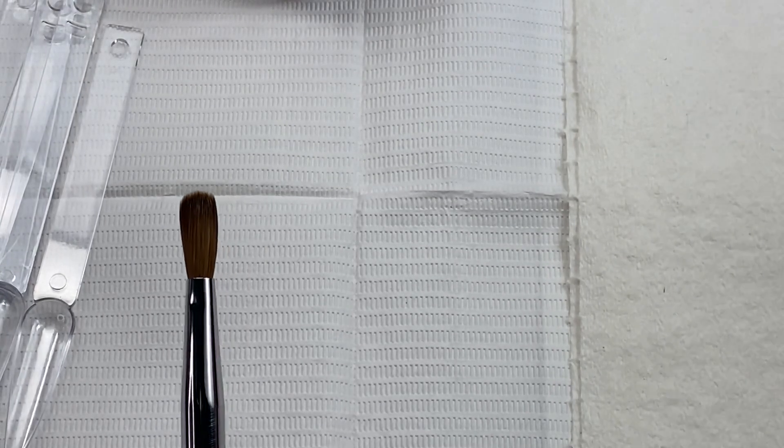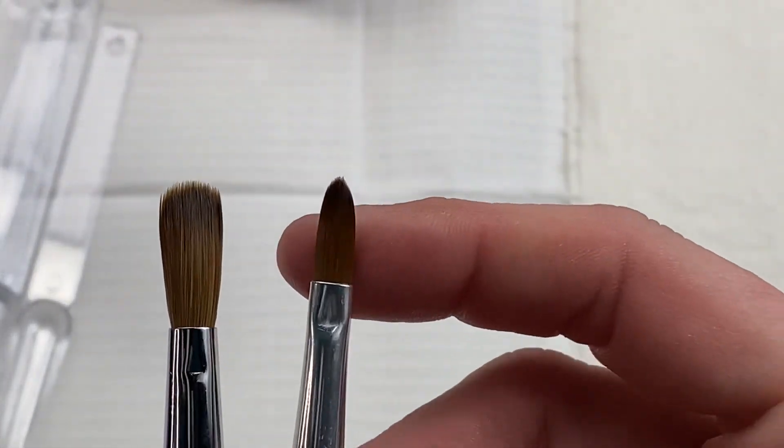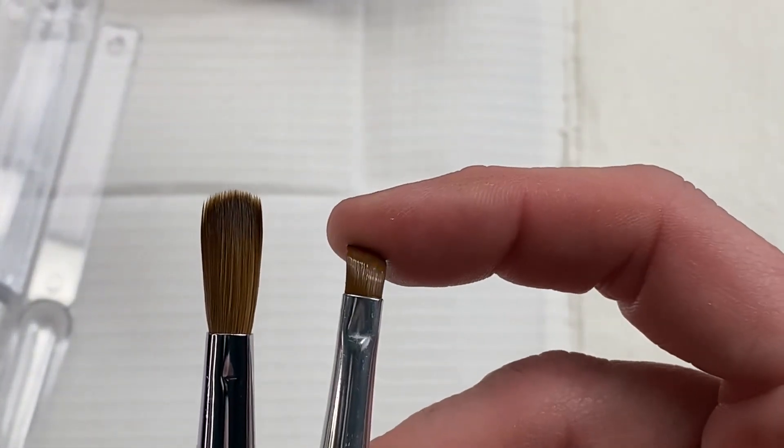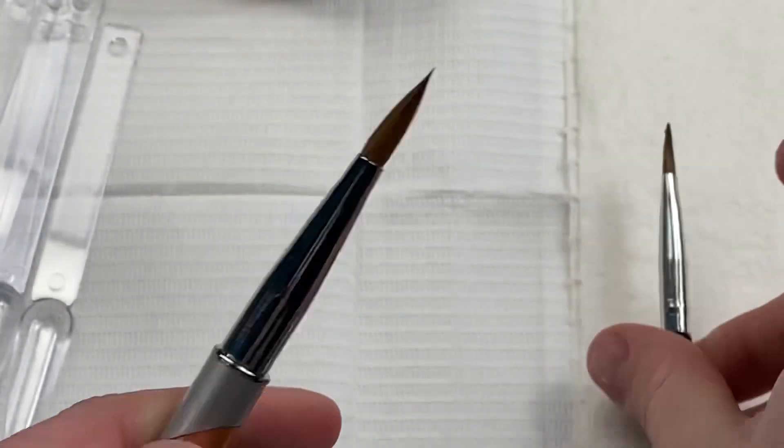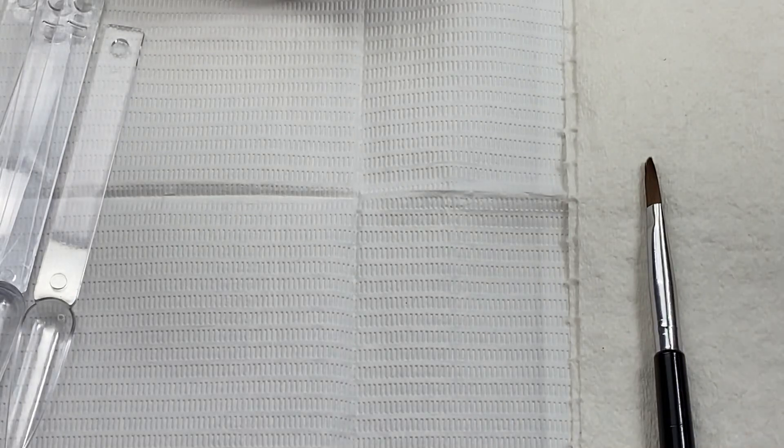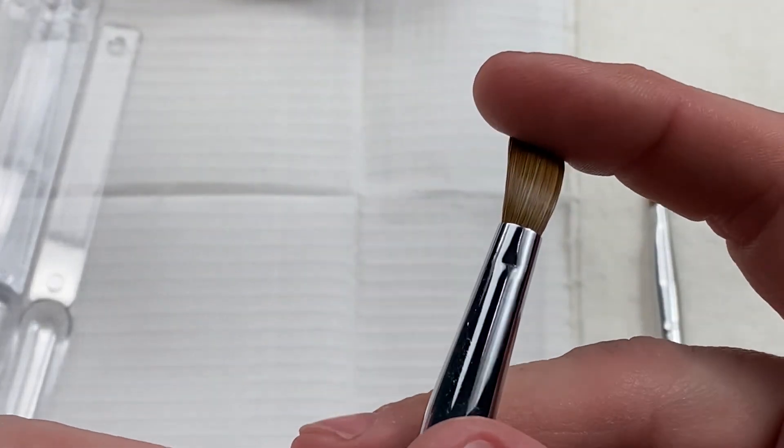This is what nylon looks like wet, it gets very dark all the way through and you see that shine right there, that slickness. Sable will have some slickness but it shouldn't be plastic looking like that.